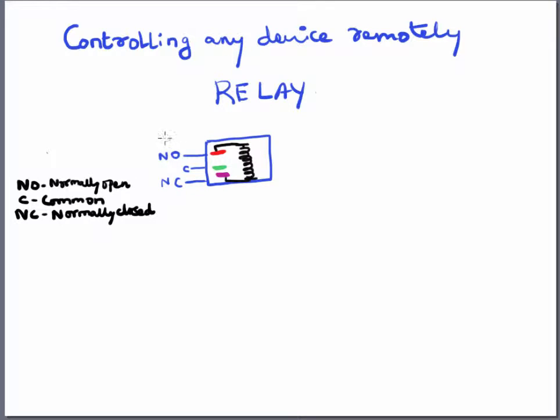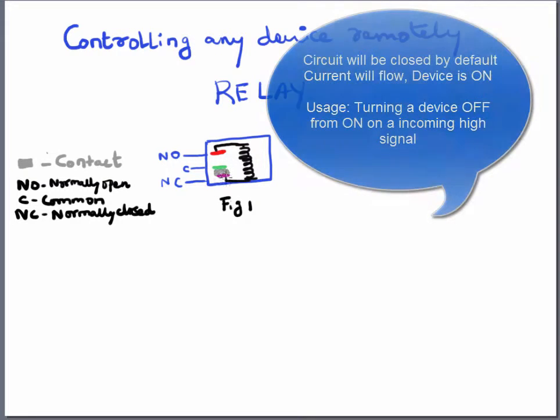NO stands for normally open, C stands for common, and NC stands for normally closed. By default, the common and the normally closed plates are joined. In other words, they are closed and attached so the current can flow through these two plates. That will make the circuit closed.